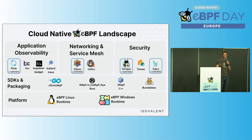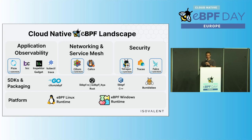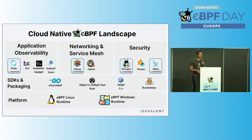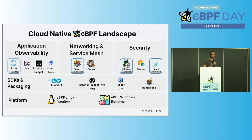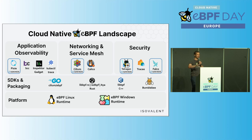Some of you may have seen the eBPF landscape available on eBPF.io. For today, I've created a new landscape with a strict cloud-native focus. Not all projects on eBPF.io are included, just the ones compelling for a cloud-native world. On the lower level we have the platform layer — eBPF can run on Windows and on Linux. Then we have the SDK and packaging layer, which makes consuming eBPF easier since eBPF itself is very low-level bytecode. There are language bindings for Go, Rust, C++, and tools like Bumblebee for packaging. Then application observability, networking and service mesh, and security.